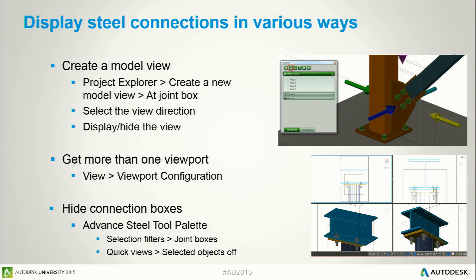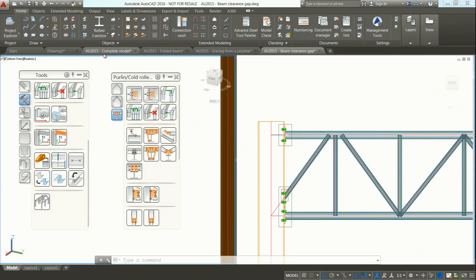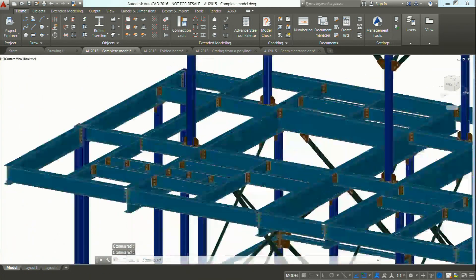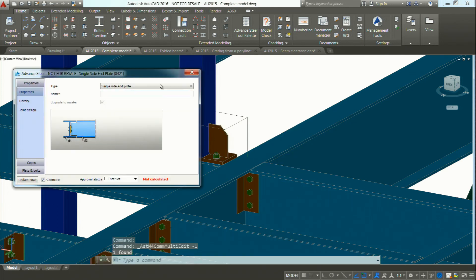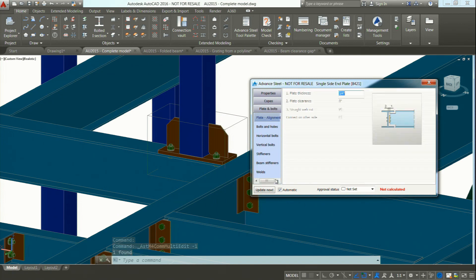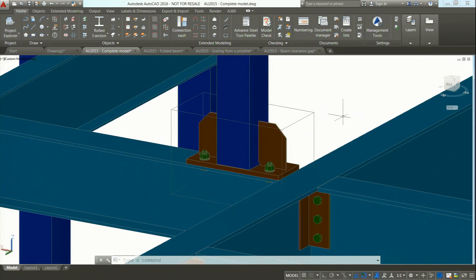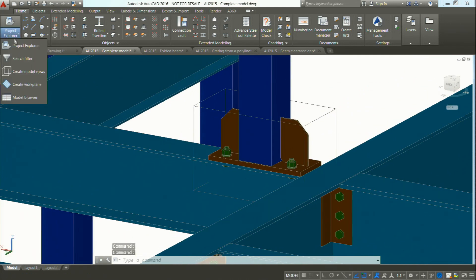Now I would like to show you how you can display a specific connection and the tools to isolate it from the model. I'm going to show you through the model view. In Advanced Steel there are some possibilities to create model views — it can be an elevation view, a top view, or just a view on a specific connection. Thanks to AutoCAD's possibilities, you can display a connection with different viewports — a side view, a front view, and a 3D view of the same connection. So I would like to display the cuboid of this connection — with a right click, advanced joint properties, I get the dialog box and the cuboid is displayed.